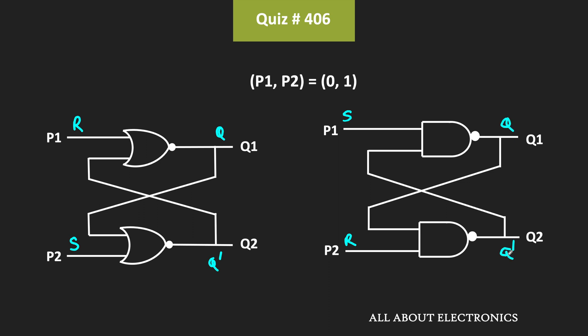So based on the specific input combination, we can easily find the output. But even if you don't know about that, then also, based on the input combination, you can easily find the outputs.